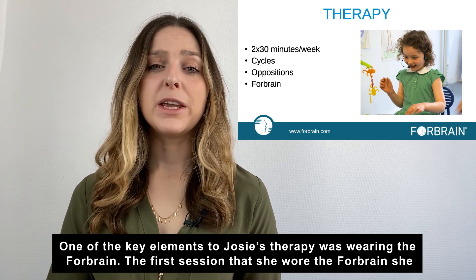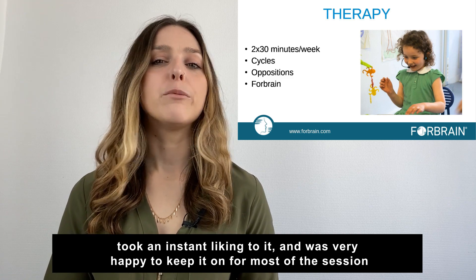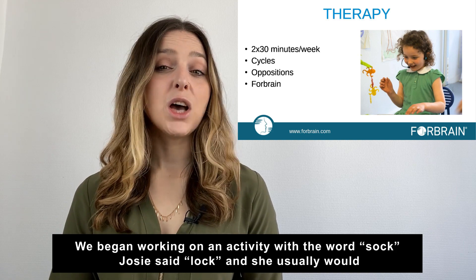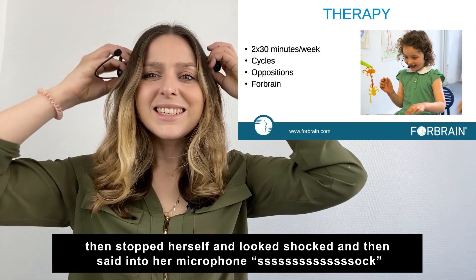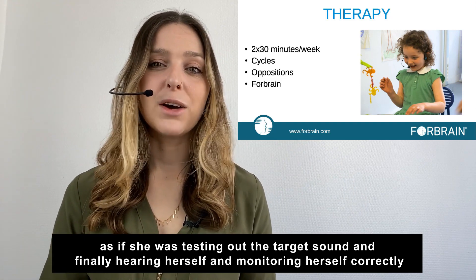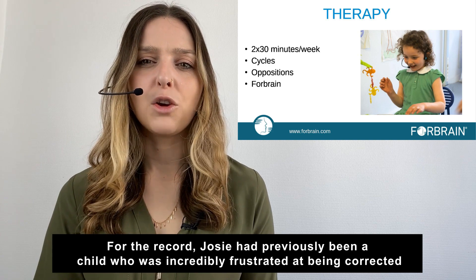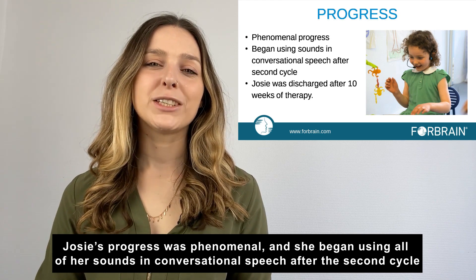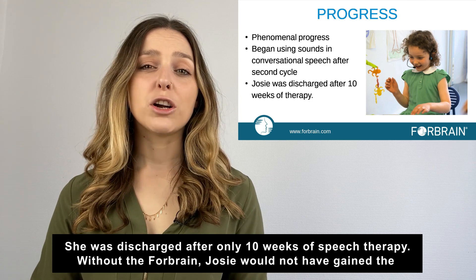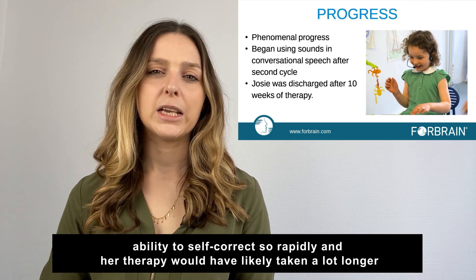One of the key elements to Josie's therapy was wearing the Forebrain. The first session that she wore it, she took an instant liking to it and was very happy to keep it on for most of the session. We began working on an activity with the word 'sock' and Josie said 'lock' as she usually would, and then stopped herself, looked shocked, and then said into her microphone 'sock' — as if she was testing out the target sound and finally hearing herself and monitoring herself correctly. Josie had previously been a child who was incredibly frustrated at being corrected and was absolutely adamant that 'that's what I said,' so her being able to self-correct was absolutely monumental. Josie's progress was phenomenal and she began using all of her sounds in conversational speech after the second cycle, and was discharged after only 10 weeks of speech therapy.